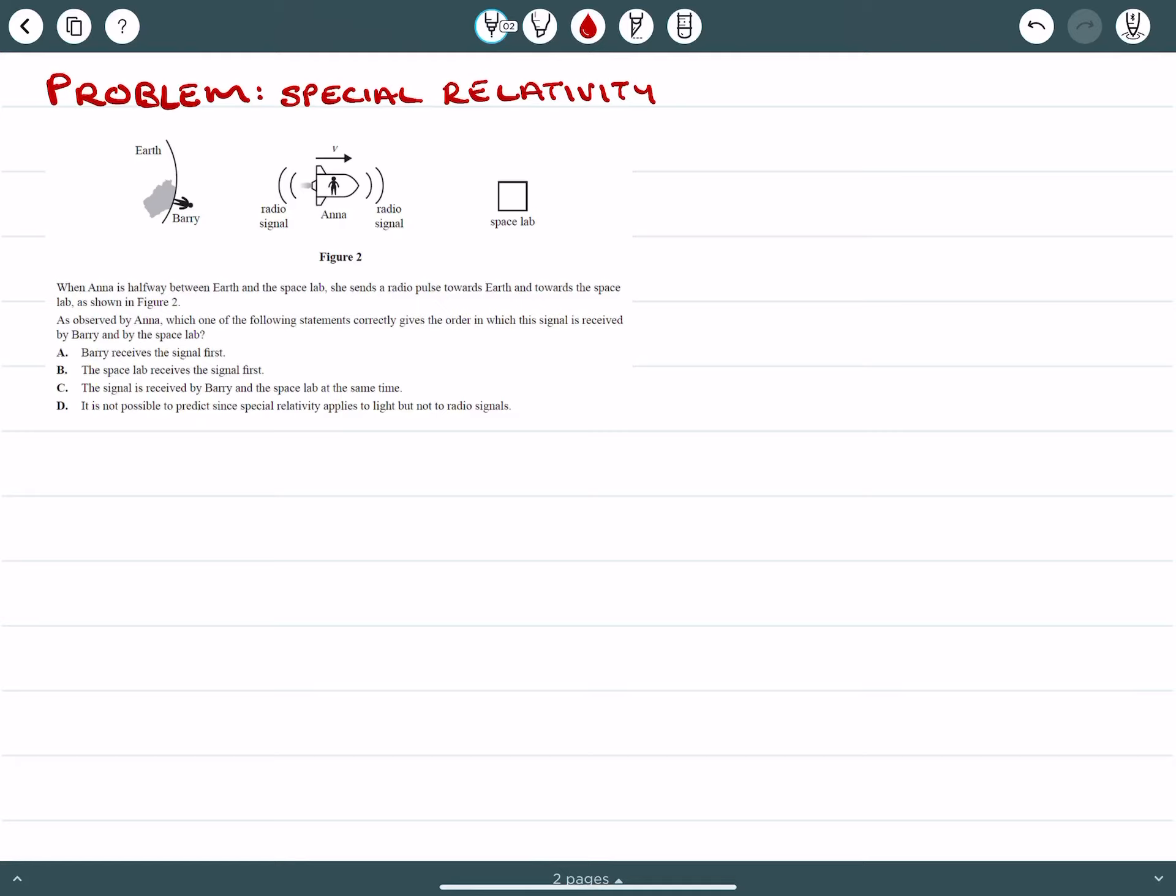And it states, when Anna is halfway between Earth and the space lab, she sends a radio pulse towards Earth and towards the space lab as shown in figure 2. As observed by Anna, which one of the following statements correctly gives the order in which the signal is received by Barry and by the space lab?